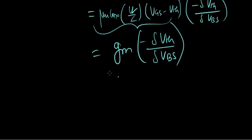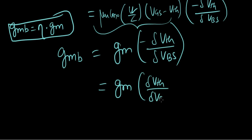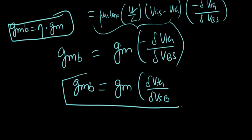And I've said it in a few lectures that gmb equals eta times gm, right? So that's all eta is. Just to remove the negative sign from here so that we're not troubled a lot, what we do is we change the polarity of this voltage. So we write Vsb to remove the negative sign from there. gm times del Vth over del Vsb.